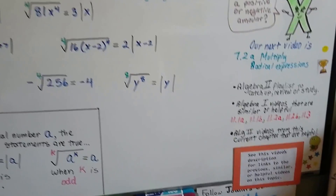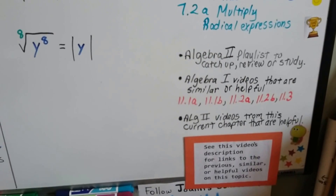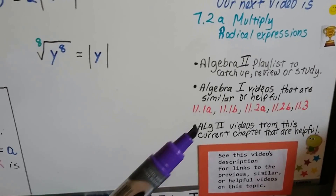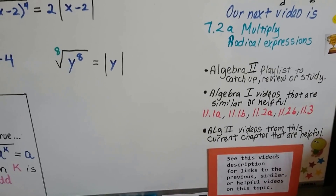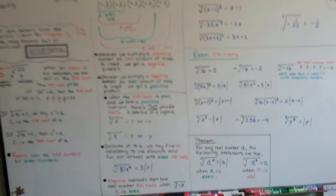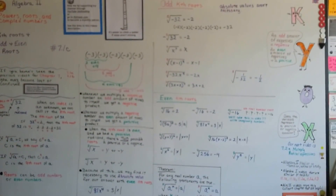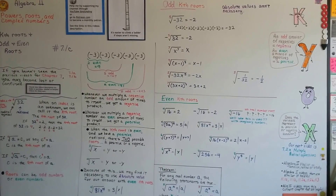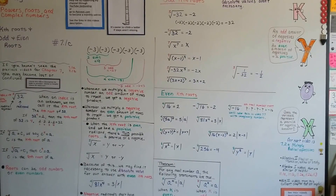Our next video is going to be 7.2a, where we'll talk about how to multiply radical expressions. I'm going to add this video to the Algebra 2 playlist. There are links in the description to Algebra 1 videos from last year where we talked about odd and even roots and kth roots, as well as 7.1a and 7.1b — our two previous videos from this chapter. This is a very tricky subject, so if you watch the Algebra 1 videos and the two videos before this one, you should understand this concept. I hope you're having a great day — I'll see you next video. Bye.